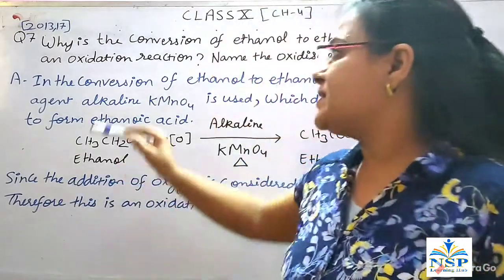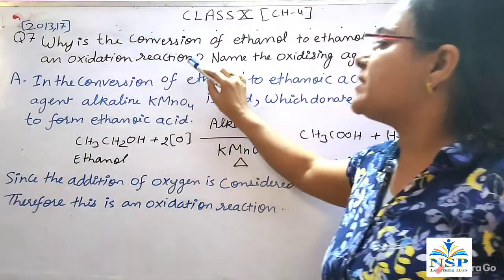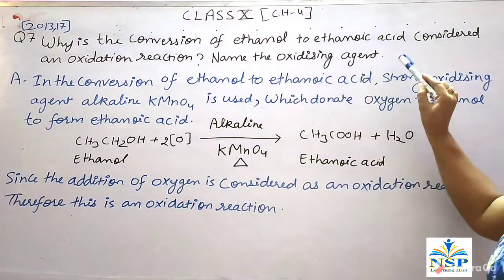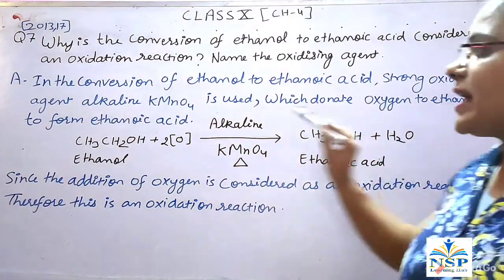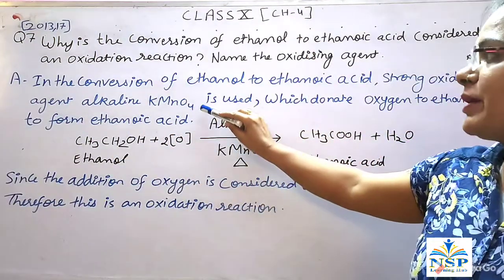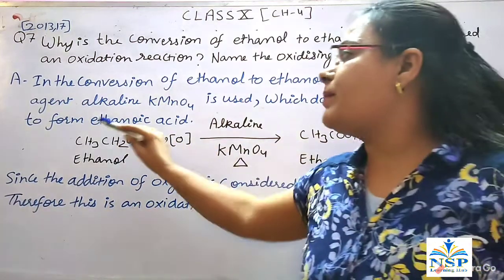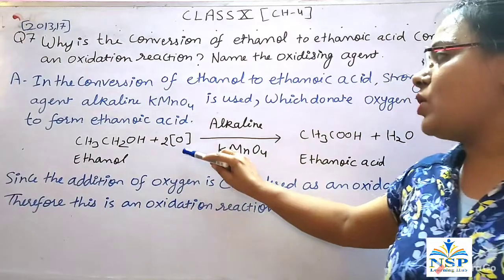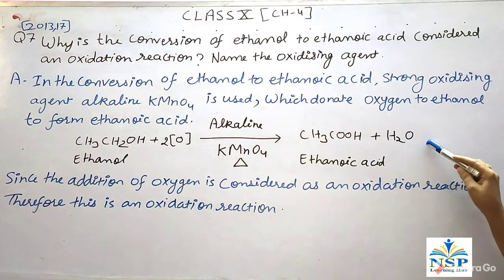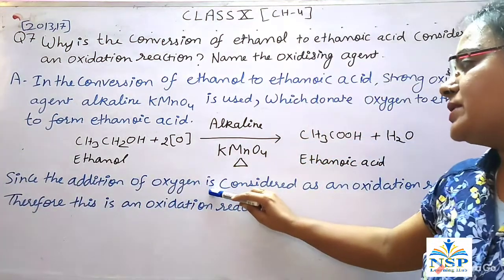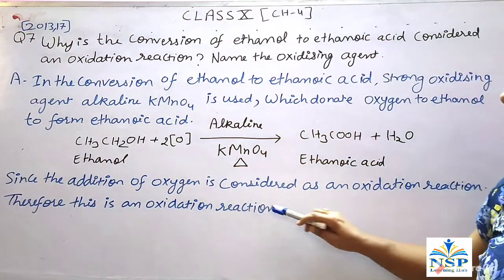Our next question is: Why is the conversion of ethanol to ethanoic acid considered as an oxidation reaction? Name the oxidizing agent. In the conversion of ethanol to ethanoic acid, the strong oxidizing agent alkaline KMnO4 is used, which donates oxygen to ethanol to form ethanoic acid. Ethanol plus oxygen in the presence of alkaline KMnO4 gives ethanoic acid and water. Since the addition of oxygen is considered an oxidation reaction, therefore this is an oxidation reaction.